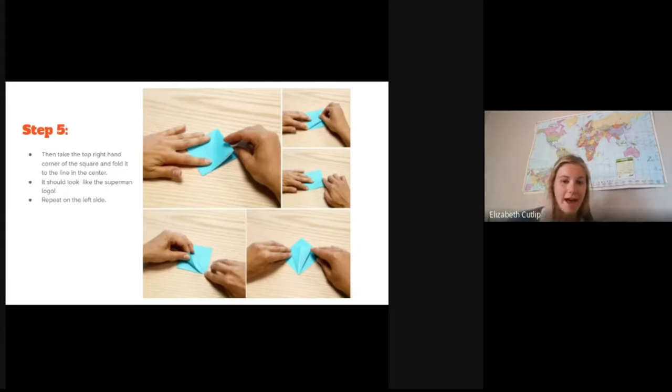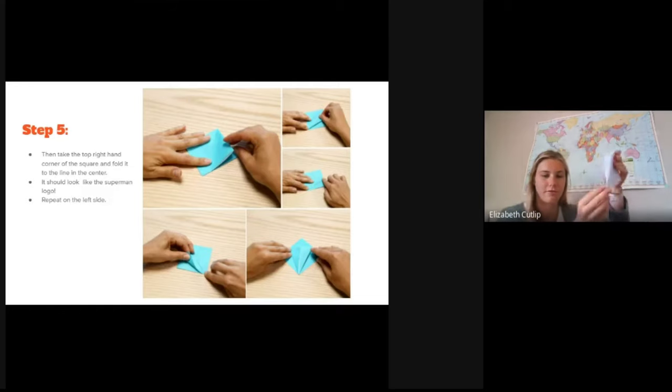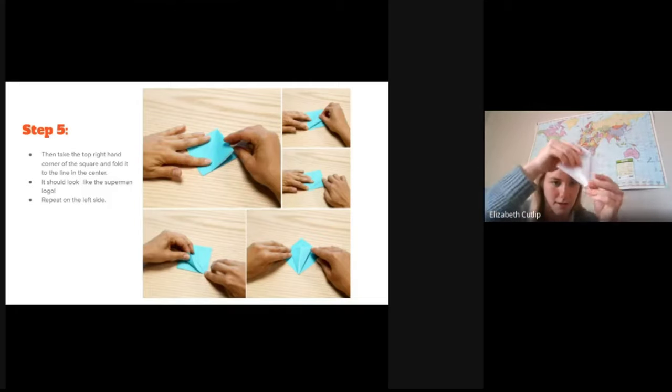All right, step five. Then you can take the top right hand corner of the square and fold it. So make sure you have the opening facing towards you still. And fold it to the center line and it should look like the Superman logo. So fold it in one side like that. Make sure you have the opening down here. And then do the same thing on the left side. So it should look something like this when you're all done folding.